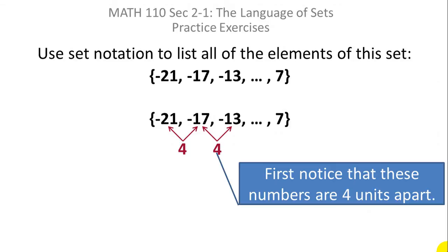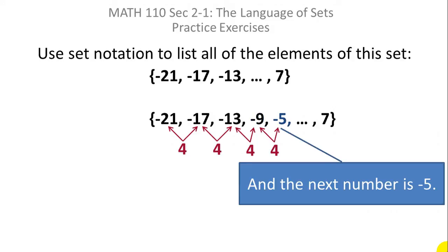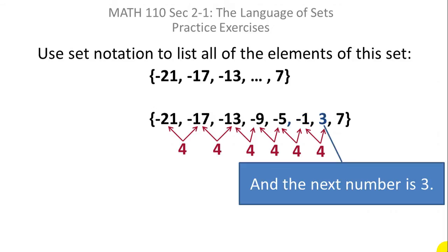So if you continue that pattern, if you add four to minus 13 you get negative nine. If you add four to negative five you get negative one. If you add four to negative one you get positive three. And if you add four to three you get seven and seven is the last thing given so you know at this point you're done.